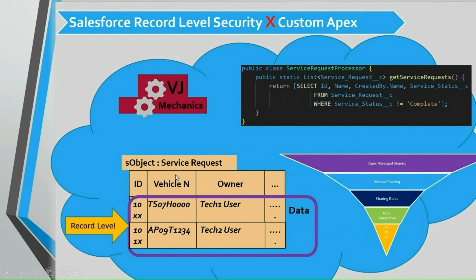To understand this concept, let's configure the OWD of the service request object as private, so that records are accessible to their owners only. For example, we have two records: one created by tech1 user and another created by tech2 user. So tech1 user will only be able to see his own record, and tech2 user is only able to see his own record.